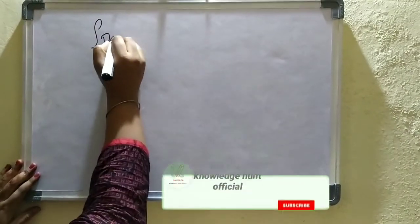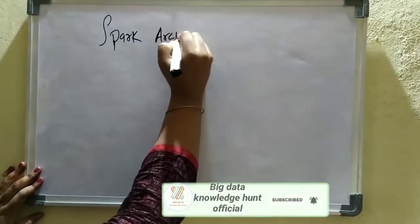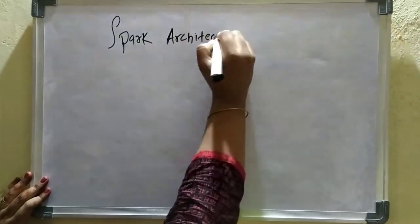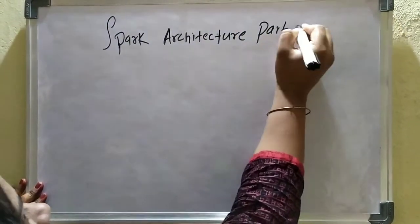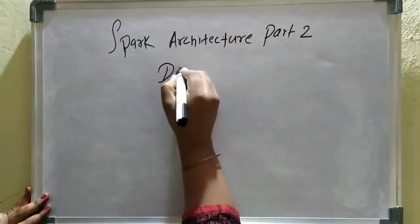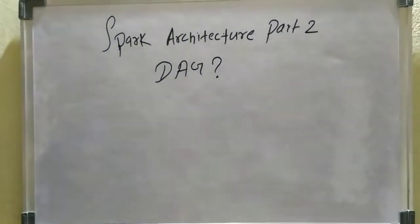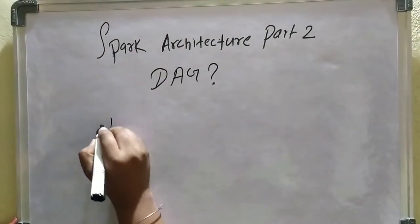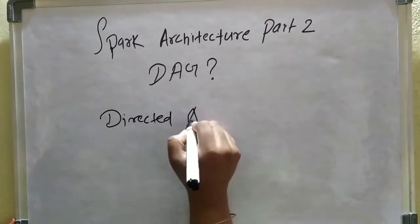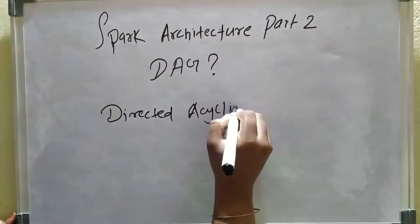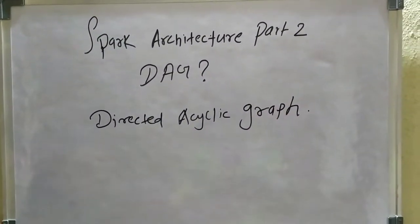Hello friends, today we will be seeing the Spark architecture part 2. If you are new to my channel, don't forget to subscribe. In today's video we will be seeing the DAG. In the first video we saw the RDD — the link to that video will be in the description. DAG is referred to as Directed Acyclic Graph, and in this video we will discuss it in detail.